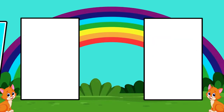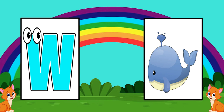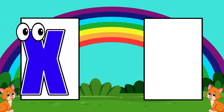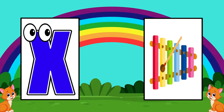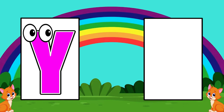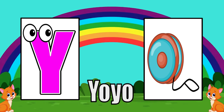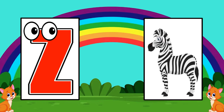W. W is for wind. X. X is for xylophone. Y. Y is for yoyo. Z. Z is for zebra.